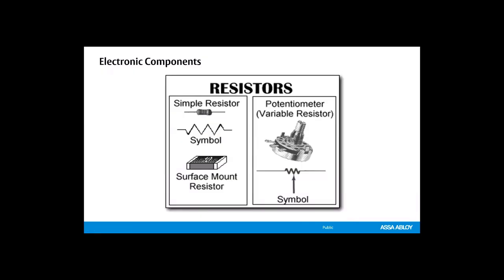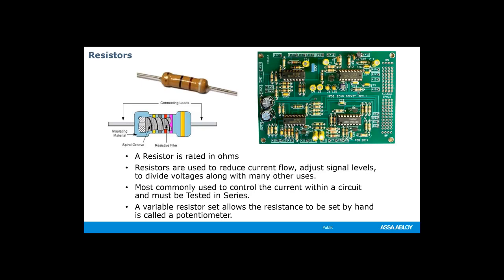Another means of controlling and restricting the amount of current flowing through a circuit is with resistors. There are quite a few different types. The most common types are a simple resistor or a potentiometer, which is a variable resistor. A resistor is rated in ohms. A resistor is used to reduce the current flow and adjust the signal level along with many other uses. Most commonly it is used to control the current within a circuit and must be tested in series. A variable resistor allows resistance to be set with a dial.